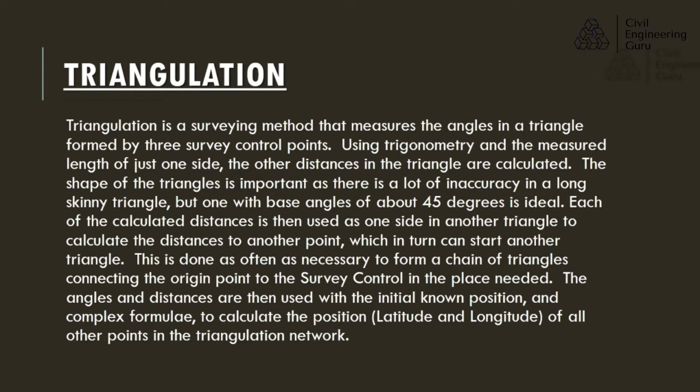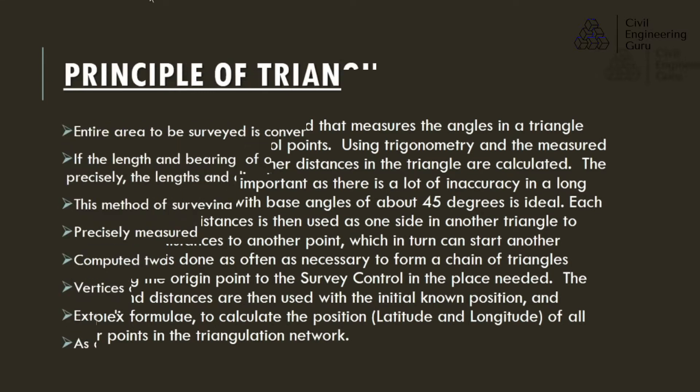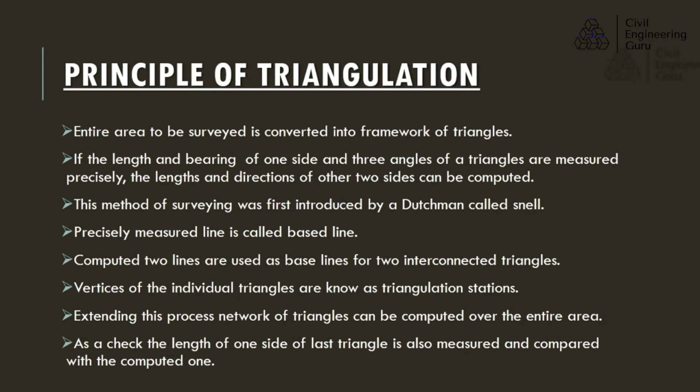Each of the calculated distances is then used as one side in another triangle to calculate the distances to another point, which in turn can start another triangle. This is done as often as necessary to form a chain of triangles connecting the origin point to the survey control in the place needed. The angles and distances are then used with the initial known position and complex formulae to calculate the position — latitude and longitude — of all other points in the triangulation network.